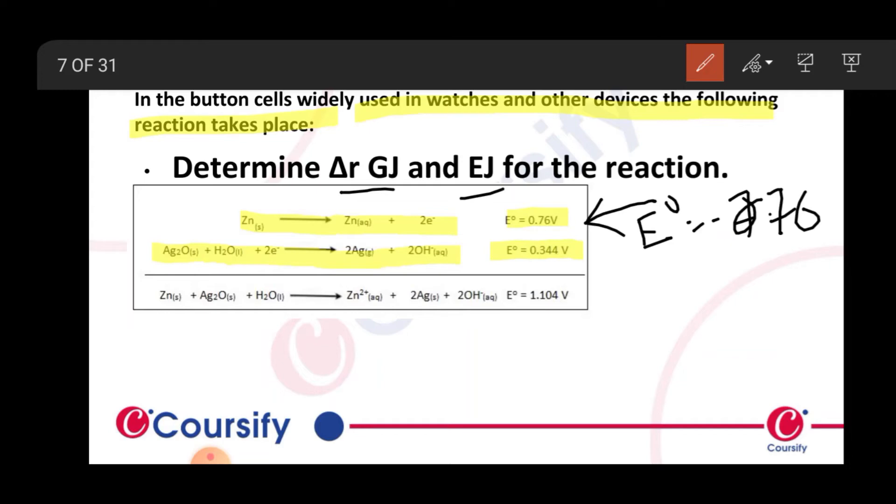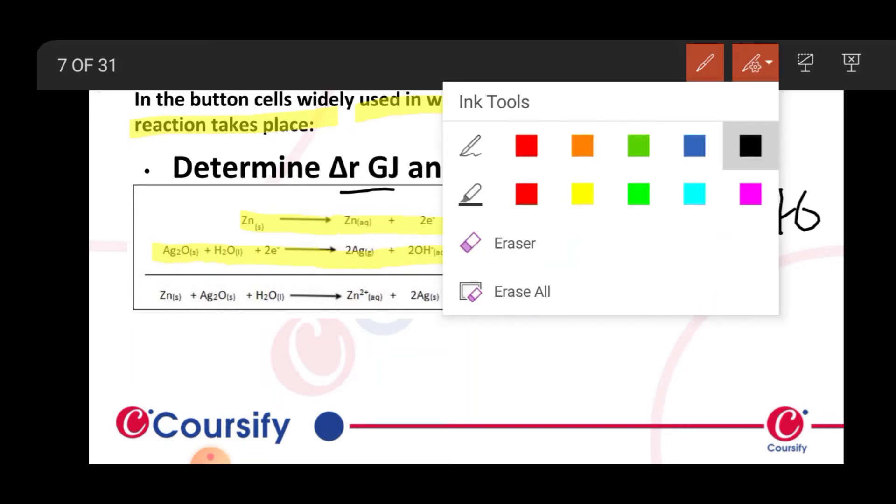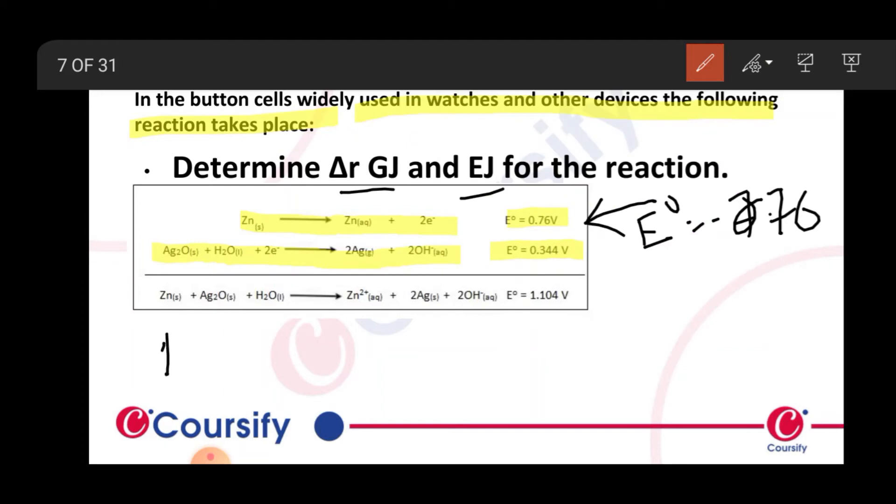First of all, calculate E⁰ cell. So E⁰ cell of reduction minus oxidation. E⁰ cell is 0.344.